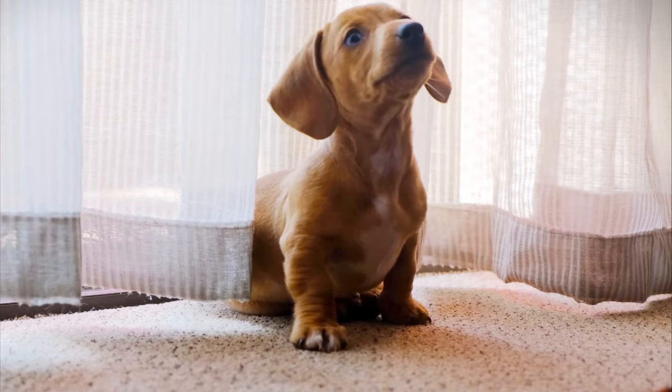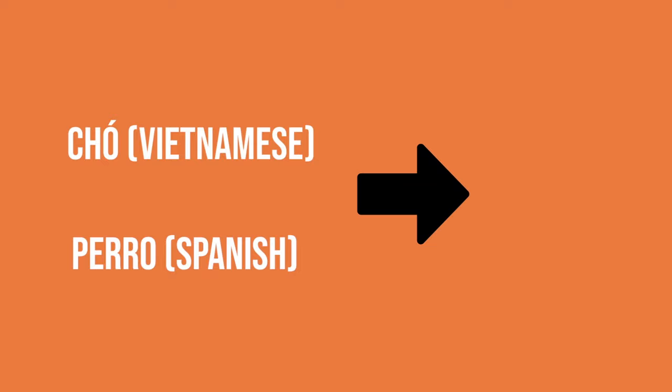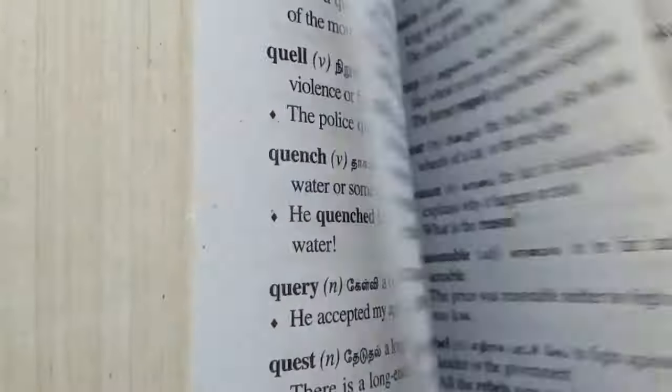It can be 'cho' in Vietnamese or 'pero' in Spanish, and then you try to find the equivalent in English, which is 'dog.' Now this process can be painfully slow, especially when you try to translate every single word in a sentence. Maybe that's the reason why many language learners think that they should avoid translation completely.